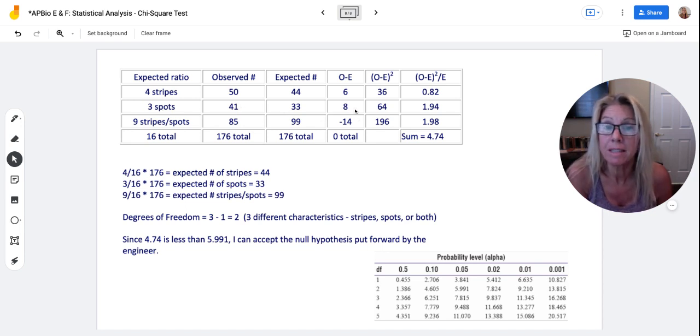Then I do the same thing. Observed minus expected is 8. I square it, 64, and I put it over what I expected. This time I expected 33, and my value is 1.94.